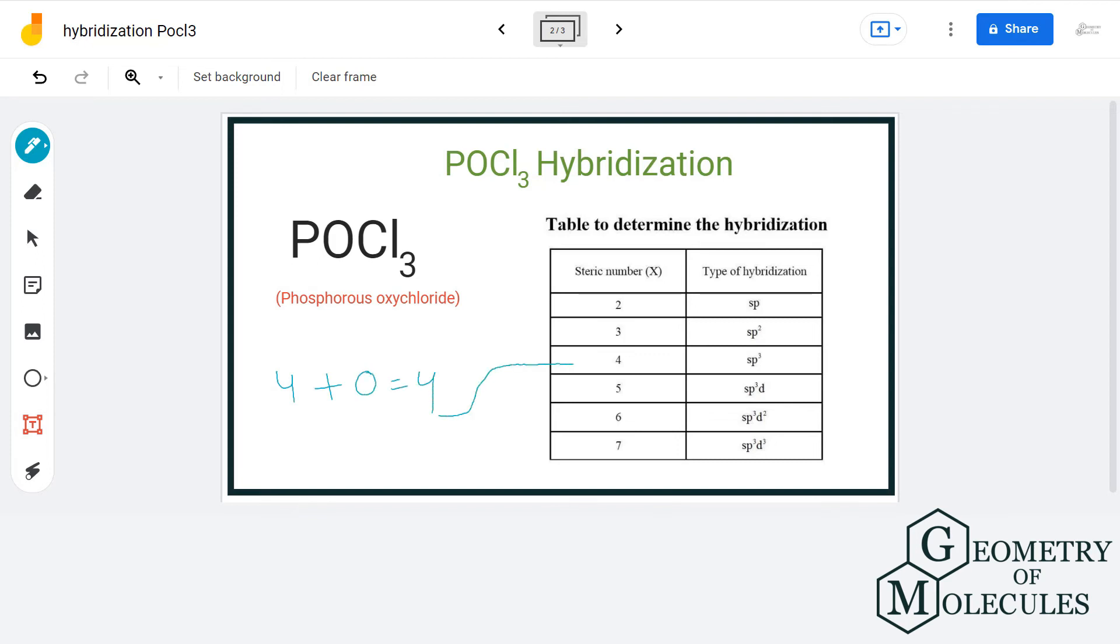And as we can see in this table, steric number four corresponds to sp3 hybridization.